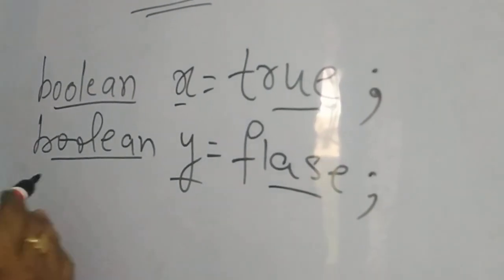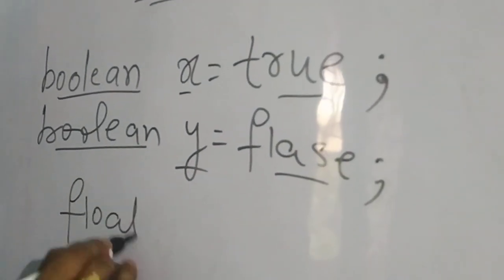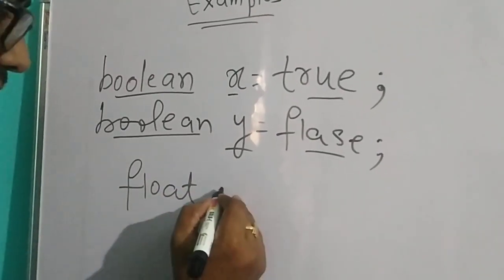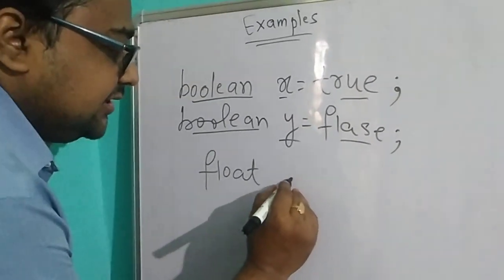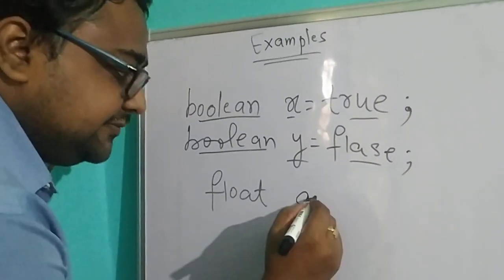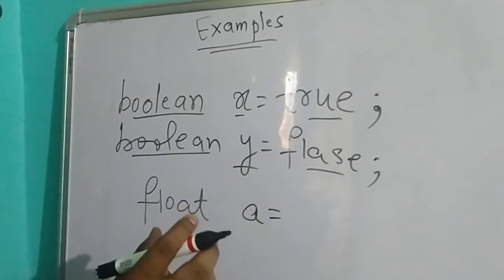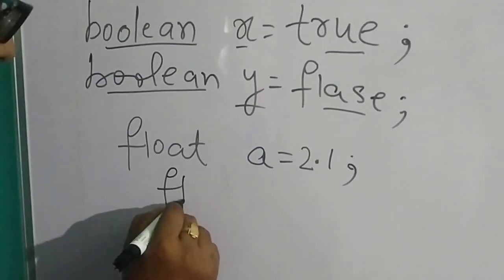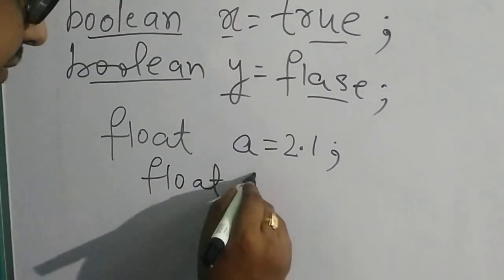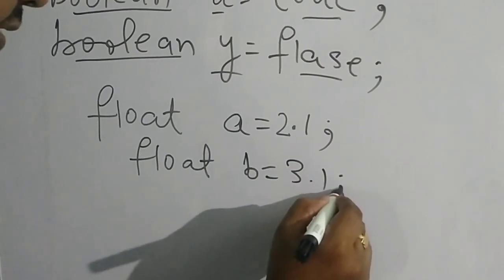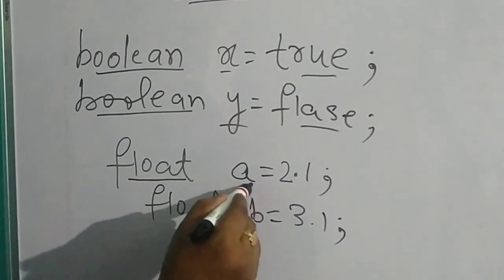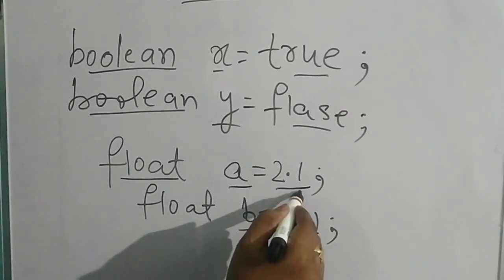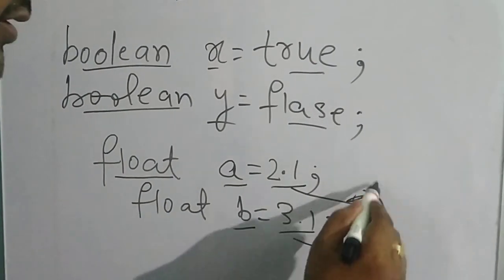The next data type is float. Float is the data type and I will write a variable name — I can write a, b, c, d, anything. Float stores a very small decimal value. So: float a = 2.1; float b = 3.1. Here float is the data type, a and b are the variables, and 2.1 and 3.1 are the values.